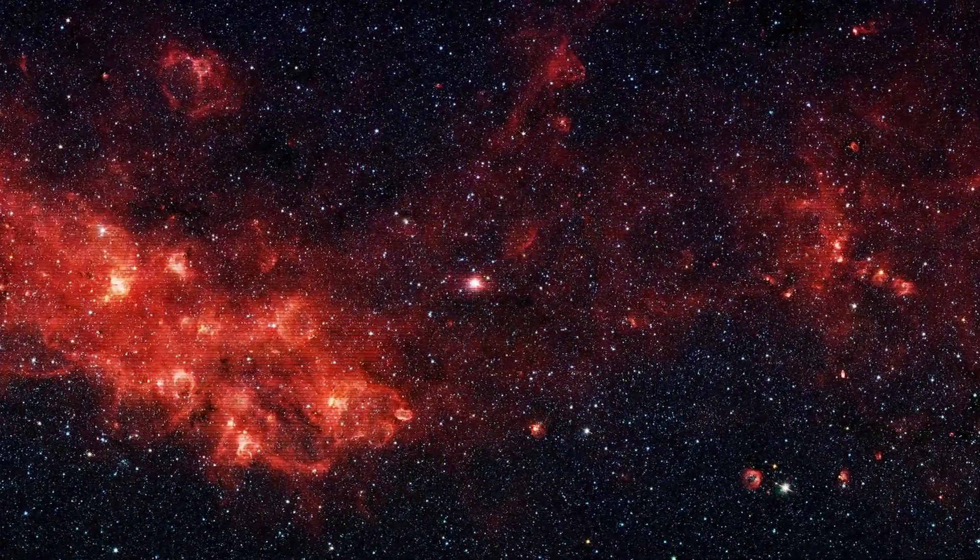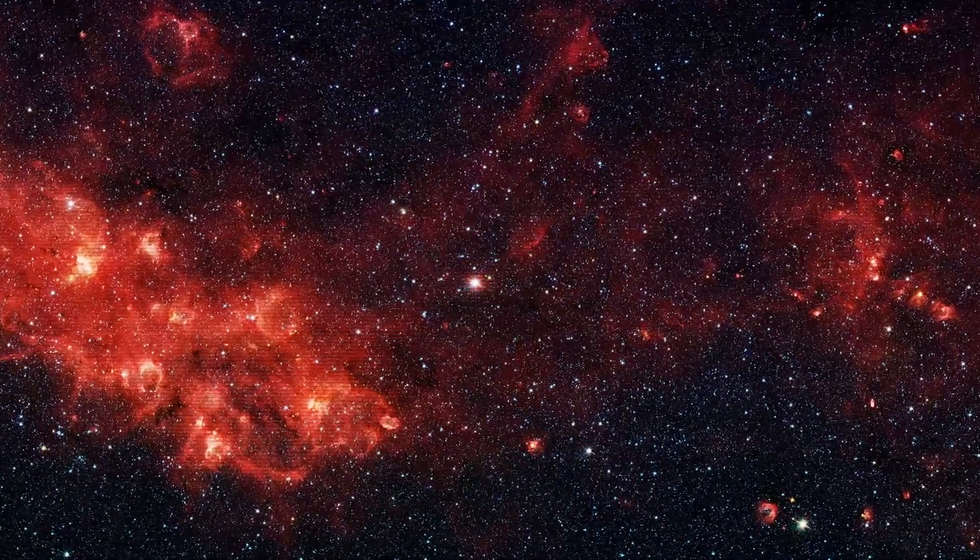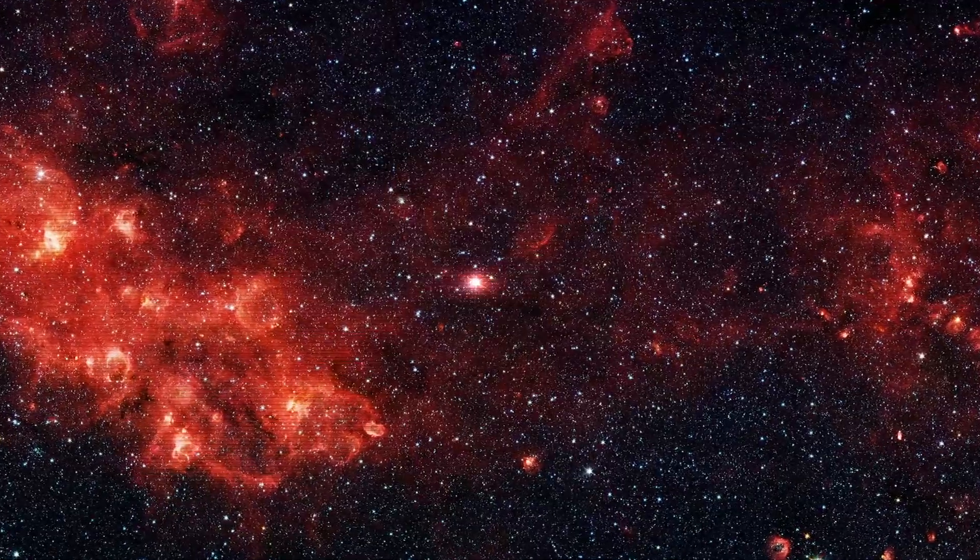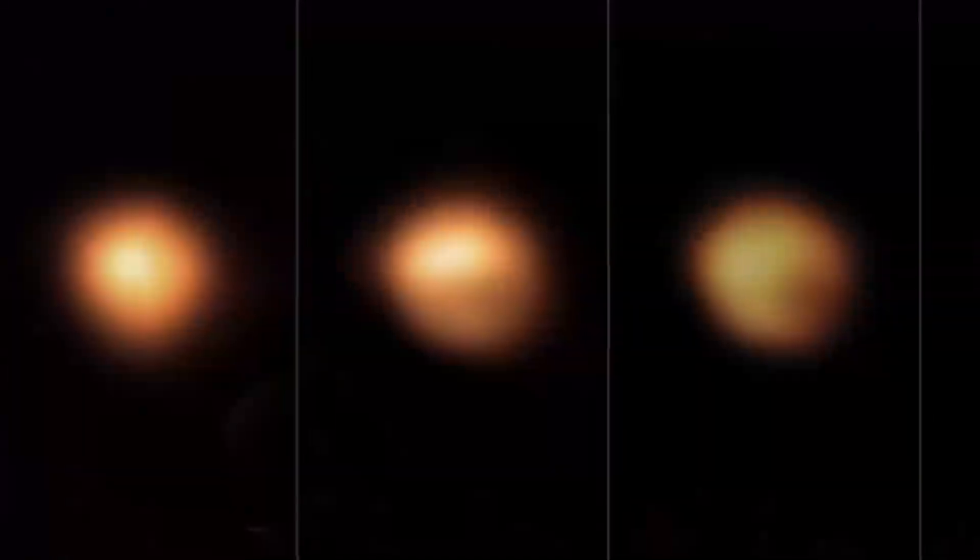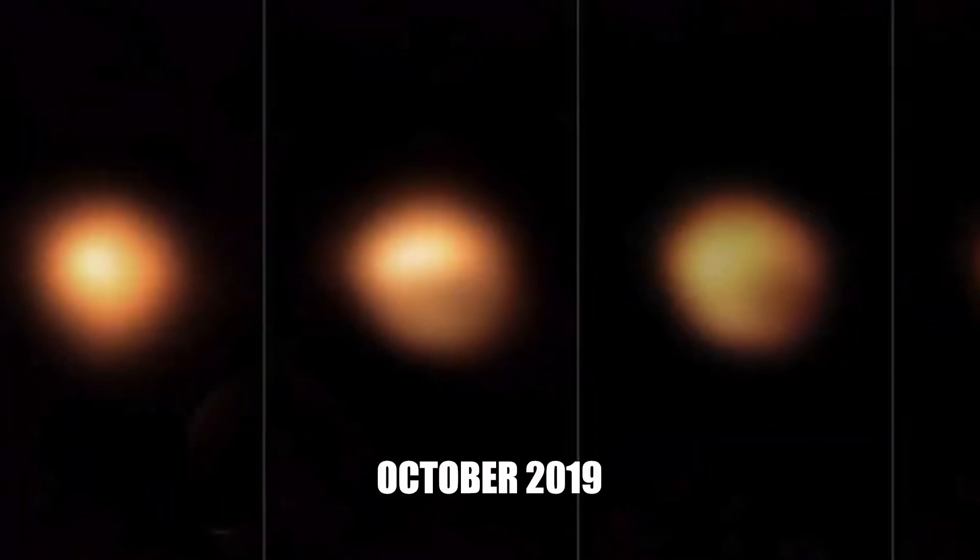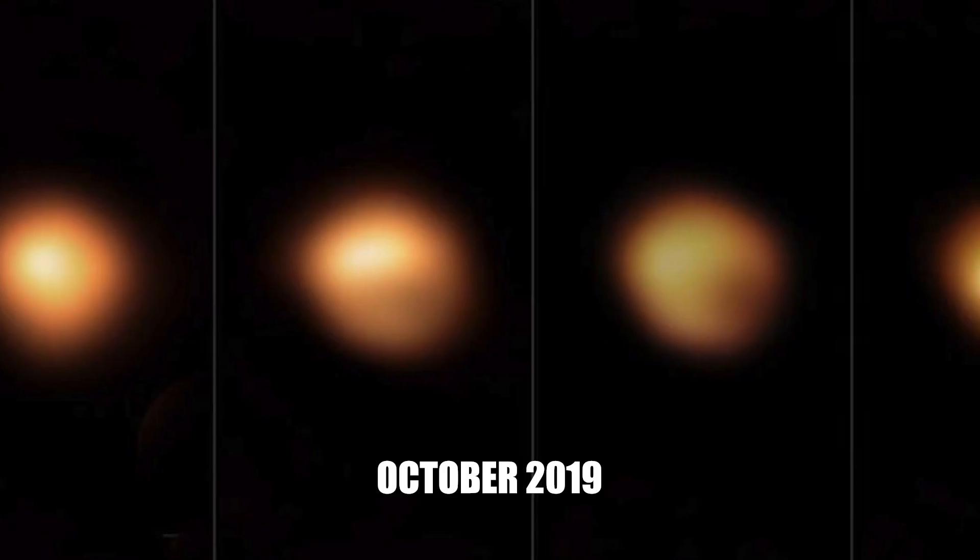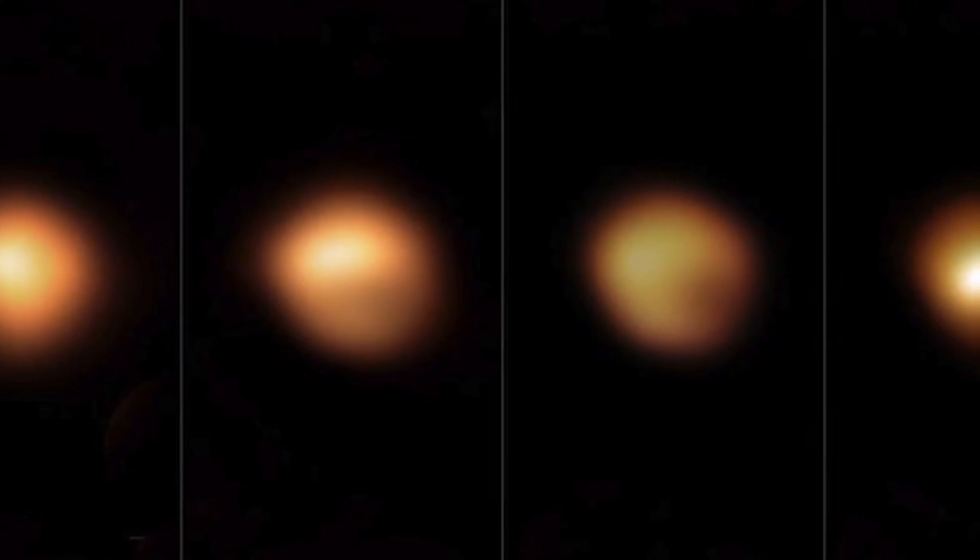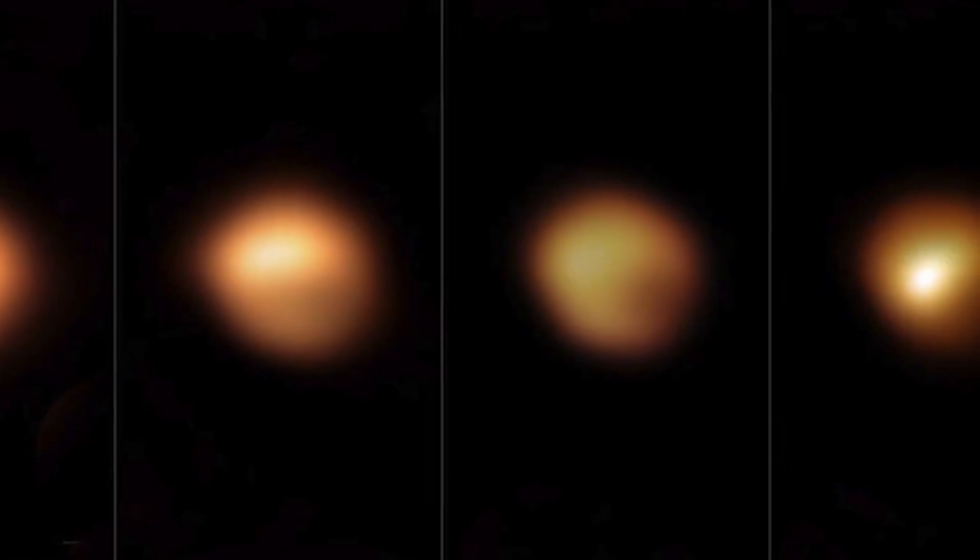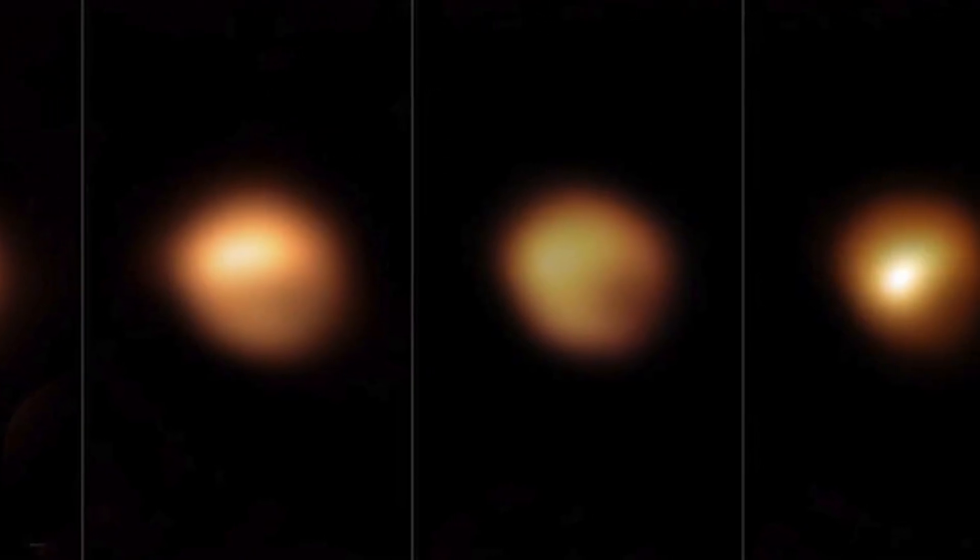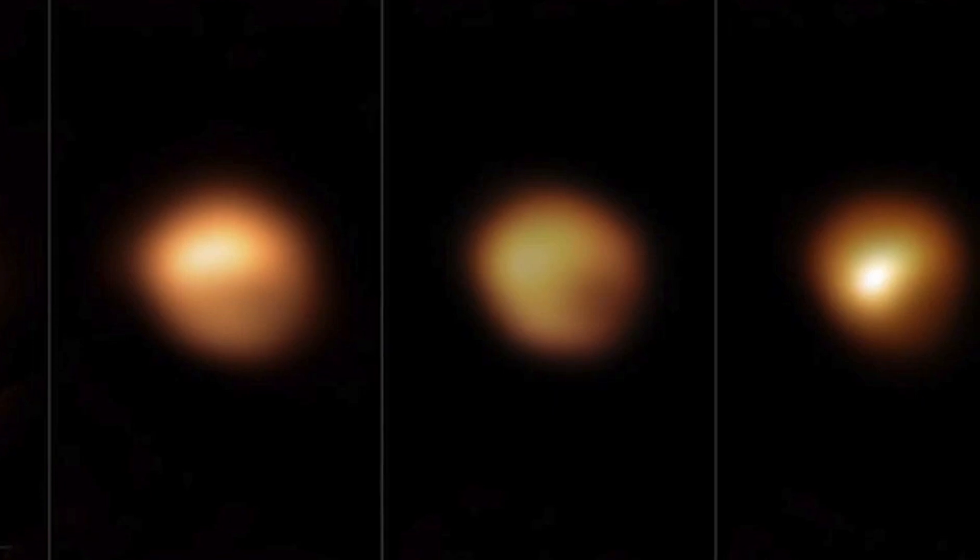While Betelgeuse's enormity and luminosity have long been known, it's the star's unpredictable behavior that recently captured global attention. In October 2019, astronomers and astrophysicists observed an uncharacteristic and dramatic dimming of the star. This reduction in brightness set off waves of speculation.